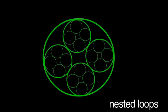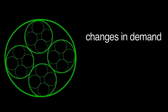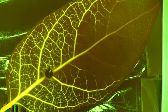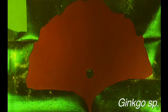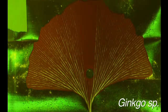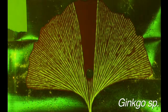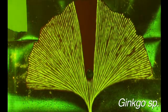So their calculations reveal that changes in demand and potential for damage make the circle-within-circle structure optimal, and this is similar to the way the lemon leaf's network looks. But it's worth noting that not all plants have come up with this particular solution — take the ancient ginkgo. It has survived for millions of years, so it's doing pretty well.